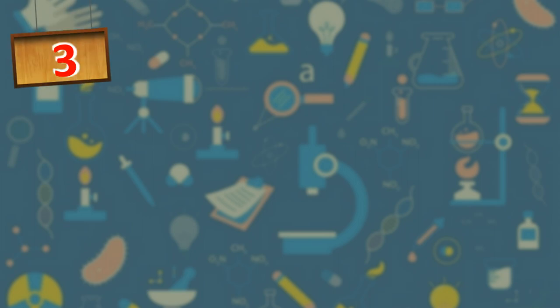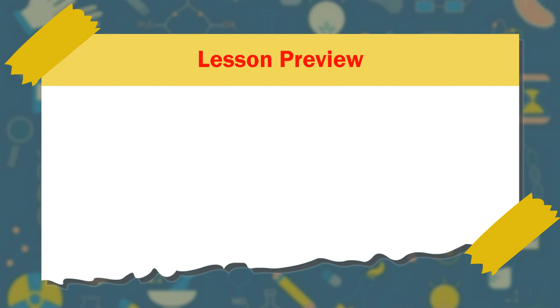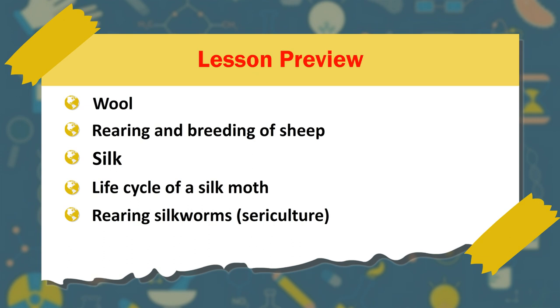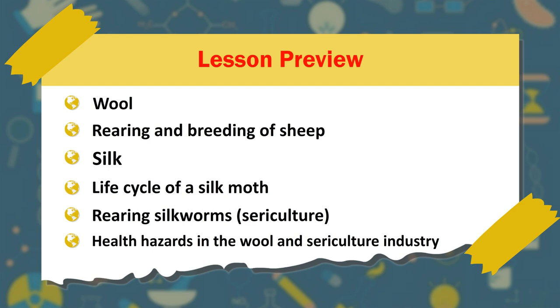Chapter 3: Animal Fibers. Lesson Preview: Wool — Rearing and Breeding of Sheep; Silk — Life Cycle of a Silk Moth; Rearing Silk Worms; Sericulture; and Health Hazards in the Wool and Sericulture Industry.